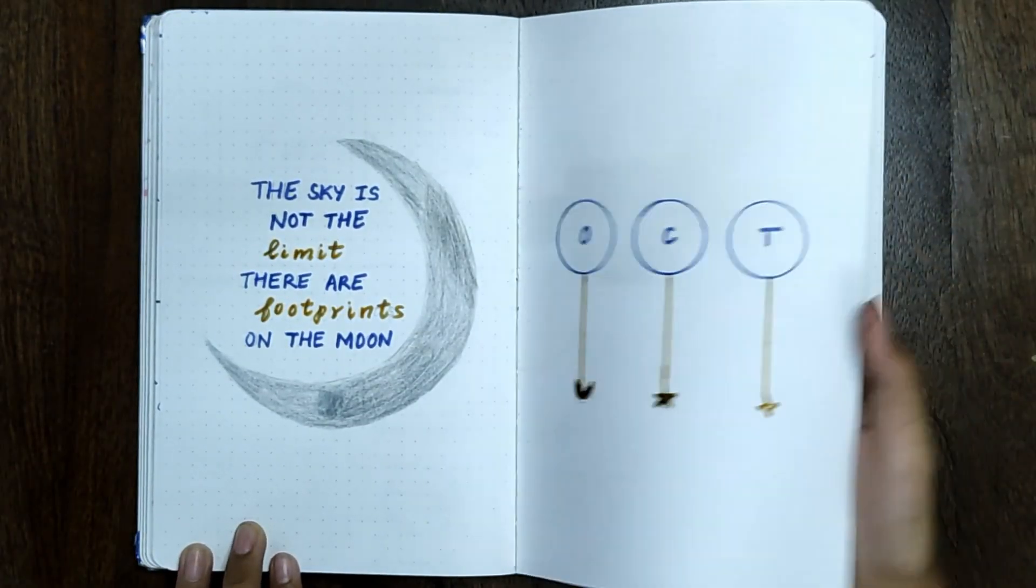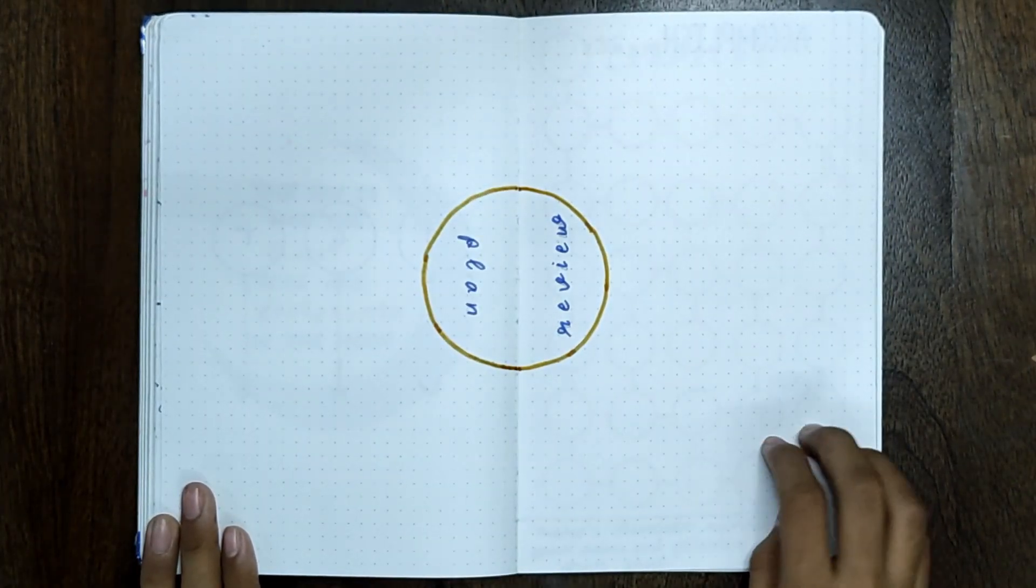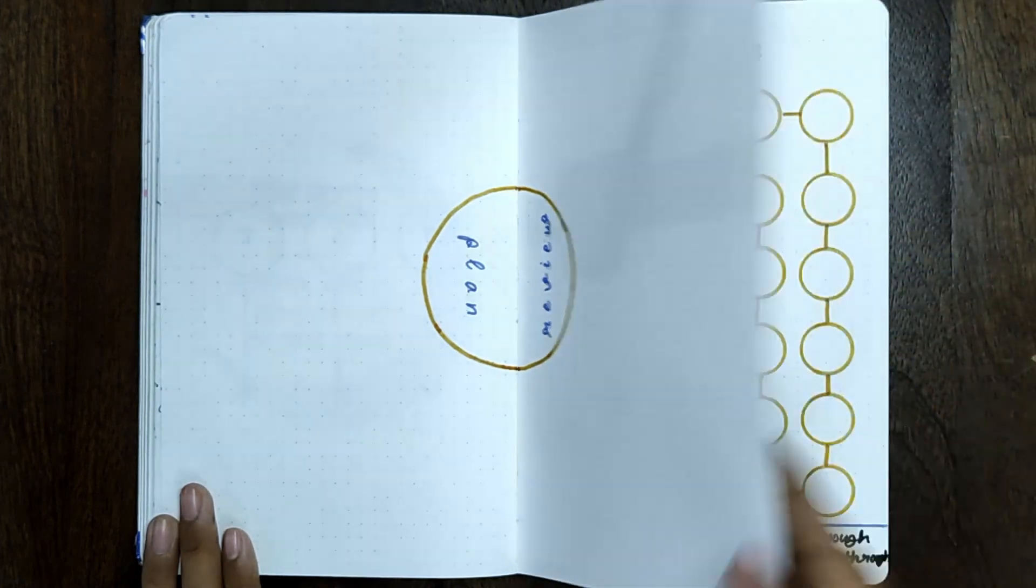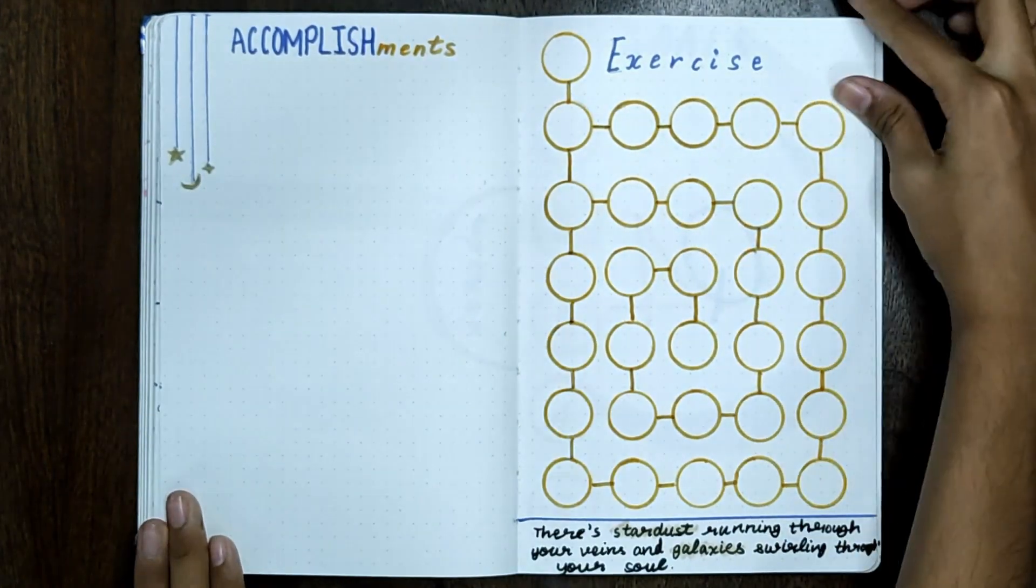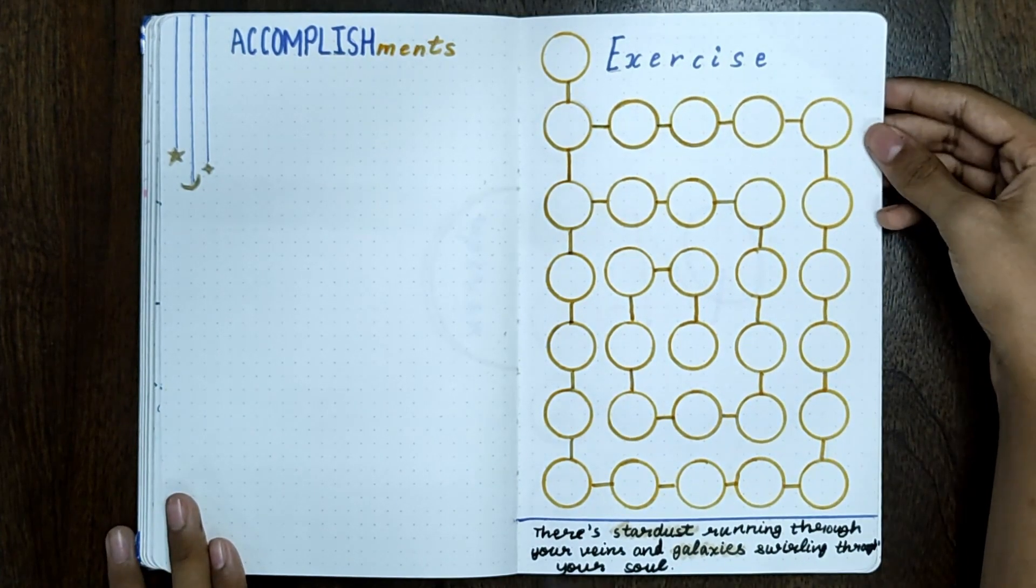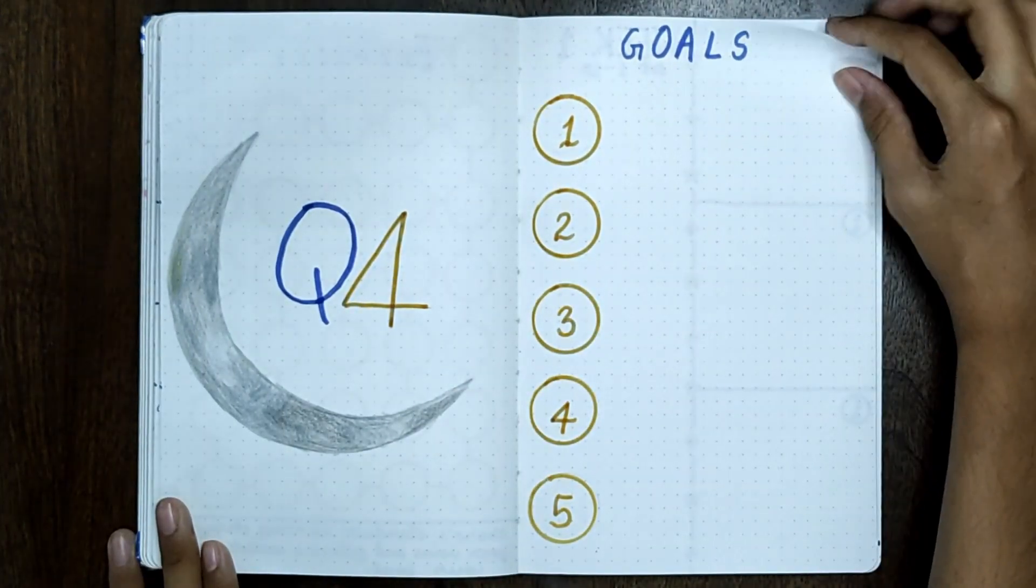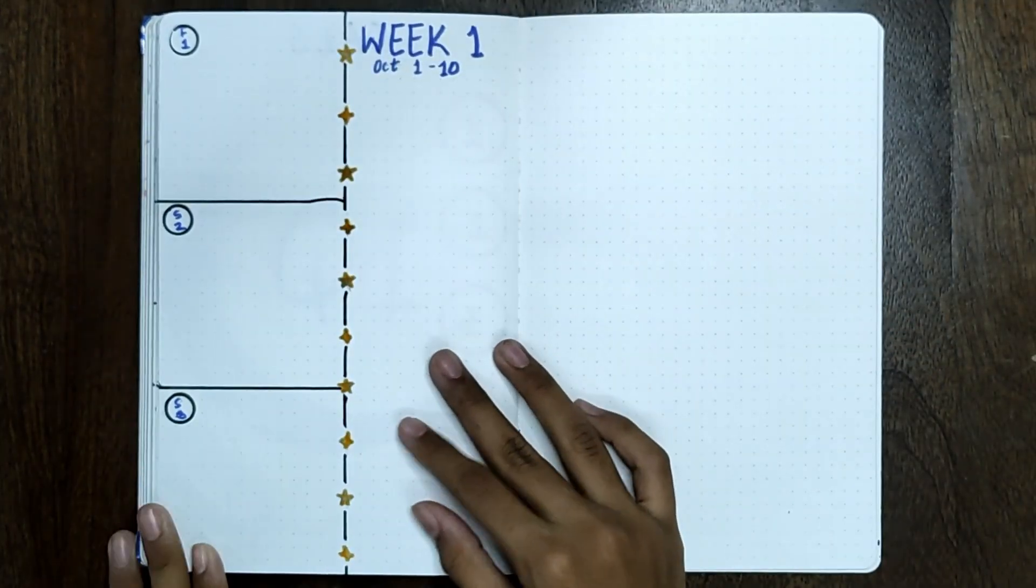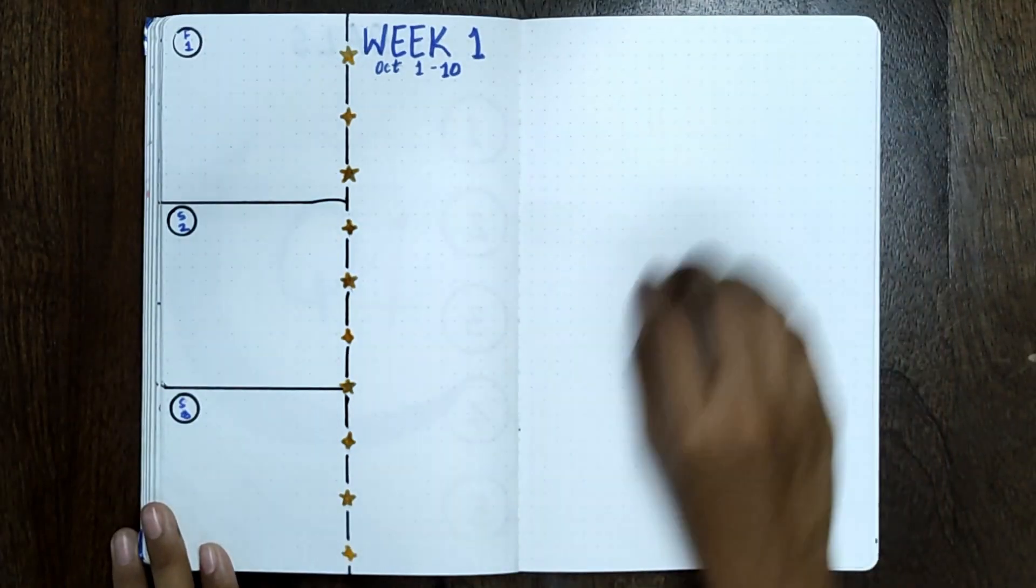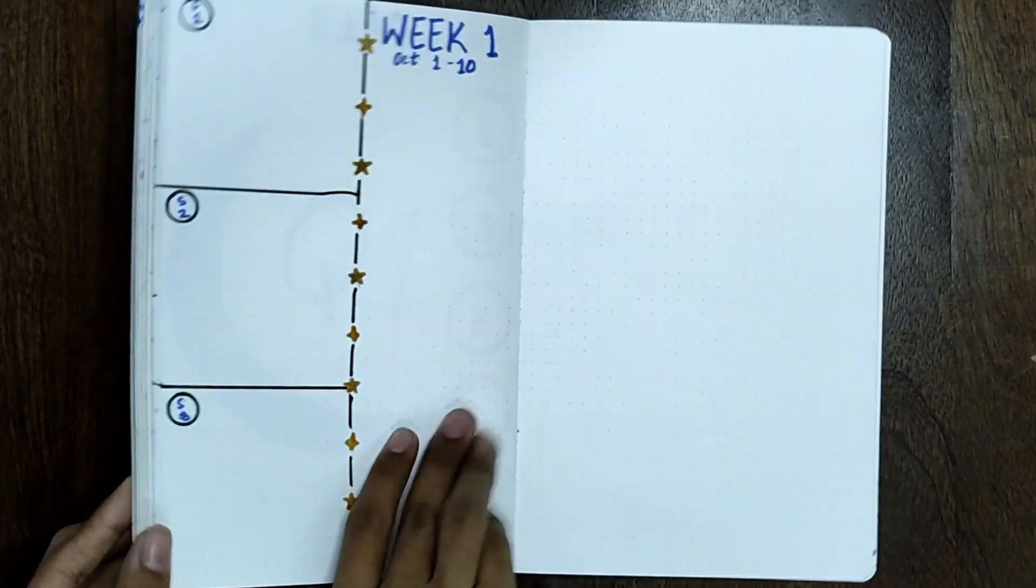Now for a final flip-through: here is my cover page and quote page, then I have a plan and review spread to plan and review my month. Then I have a place to note down my accomplishments and wins, and also on the right, an exercise tracker. I also have quarter four goals with space to mention five top goals, and then lastly, I have the daily logs for the first three days of October.